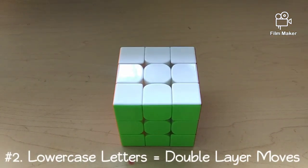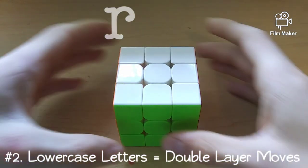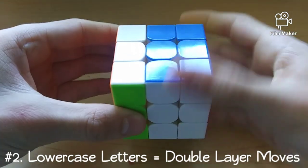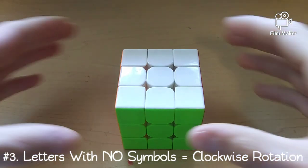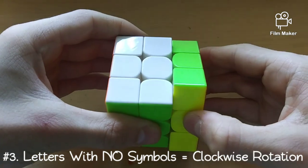Rule number 2, a lowercase letter, like this, signifies a double layer turn. Rule number 3, a plain letter with no symbol after it, as shown here, signifies a clockwise layer rotation.